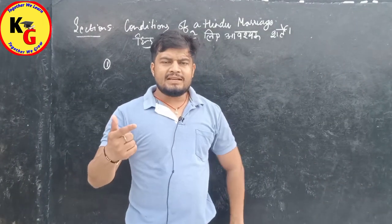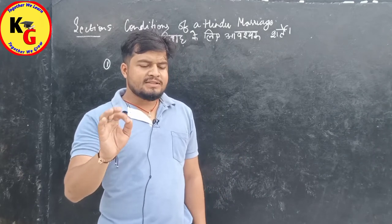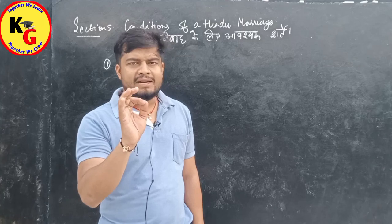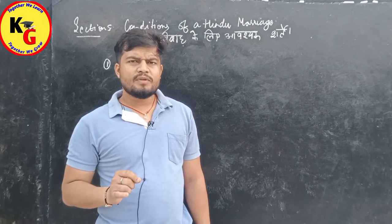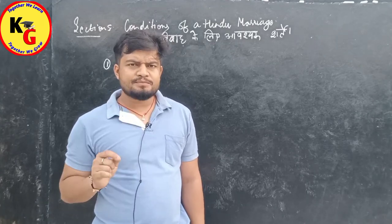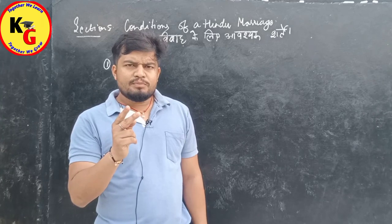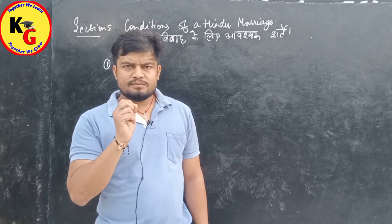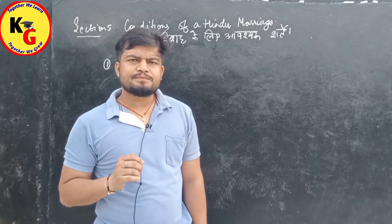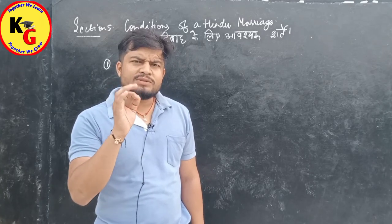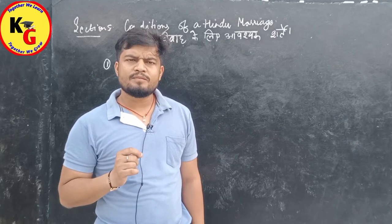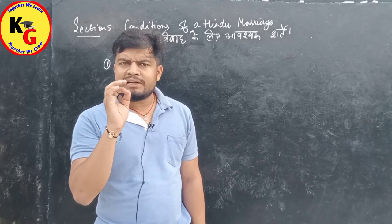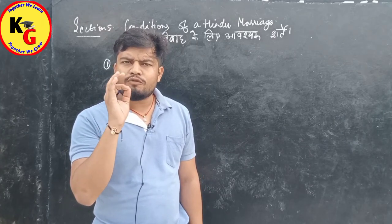The first condition: Neither party has a spouse living at the time of marriage. At the time of marriage, neither of the two parties should have any living spouse. If such is the case, the marriage will be treated as a void marriage.